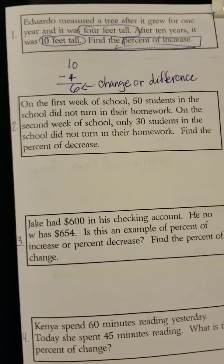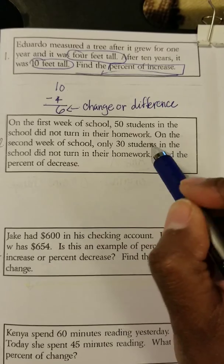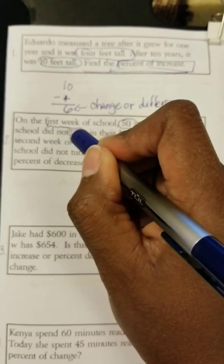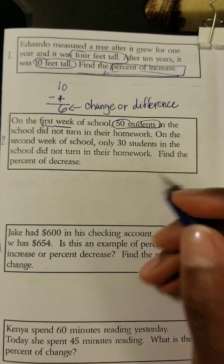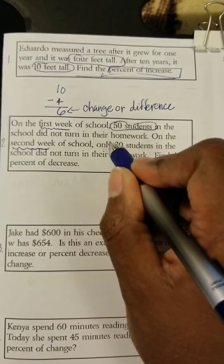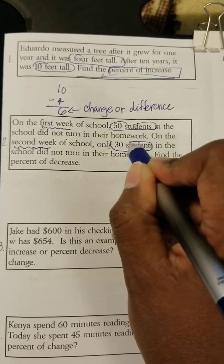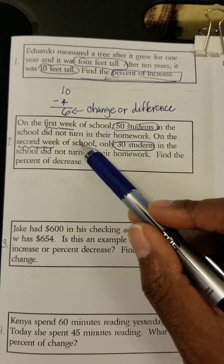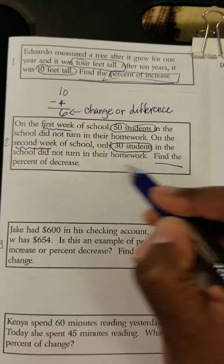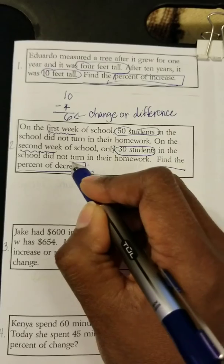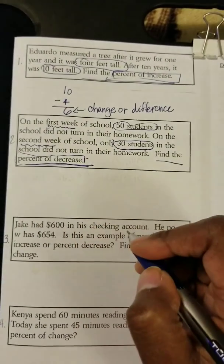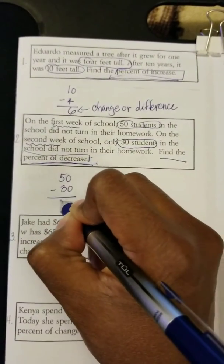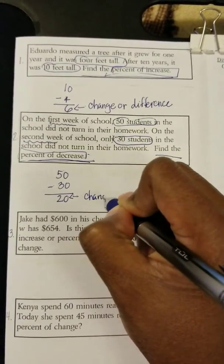Example number two says: on the first week of school, 50 students did not turn in their homework. We start at 50, so we underline first week. On the second week — underline second week — only 30 students. We already know it's going to be a decrease, because in the first week it was 50, and in the second week it was 30. So we're going to find the percent decrease and box in our vocabulary. First we find our change by subtracting: our change is 20.